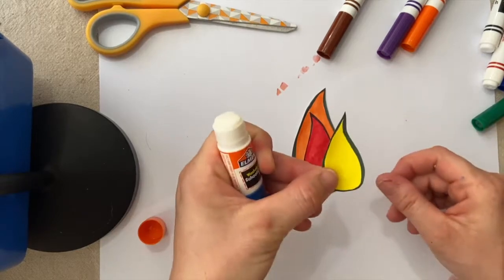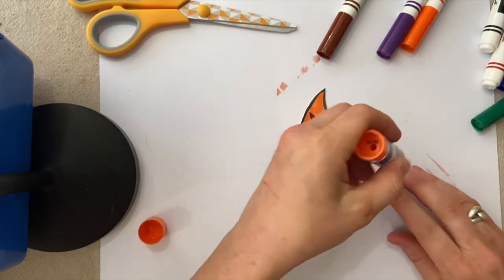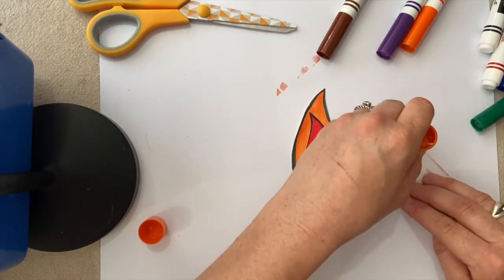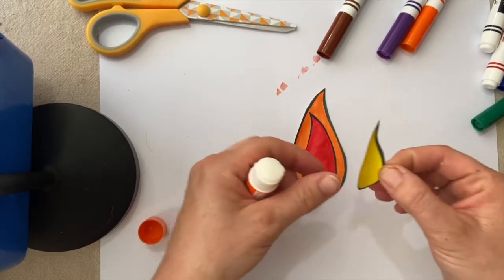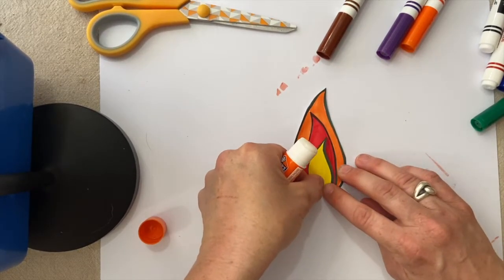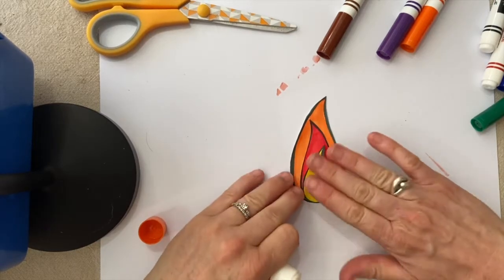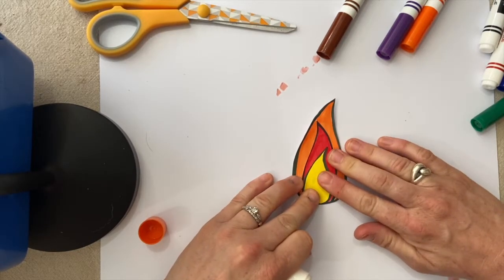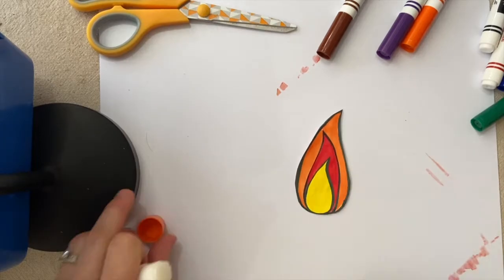Then we'll grab the yellow one. This will be the last piece. We'll put the same amount, glue all over it. And then line it up on the bottom with the red one and the orange one. Now we have a flame.